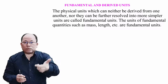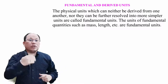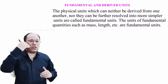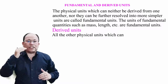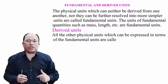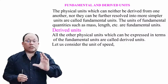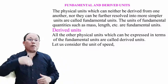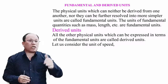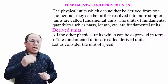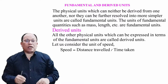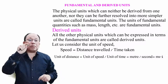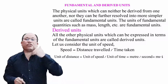There are seven fundamental quantities. For example, the unit of length is meter, so meter is a fundamental unit. Now, derived units: all other physical units which can be expressed in terms of fundamental units are called derived units. For example, speed is distance divided by time. The unit of distance is meter and the unit of time is second, so meter per second is the unit of speed — and it is a derived unit.